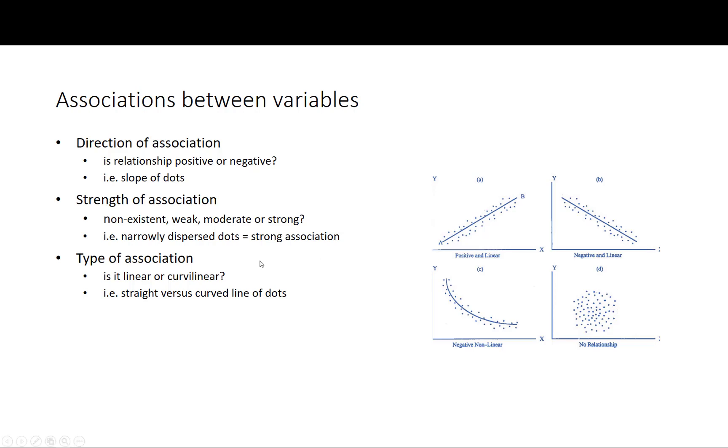The strength of the association, whether it's non-existent, weak, moderate or strong. This relates to how dispersed our data points are. When we have narrowly dispersed dots around the distribution, we say that the strength of the association is very strong. However, if you see over here where they are just randomly distributed around no particular line, we say that there is no association there.